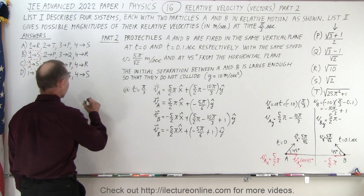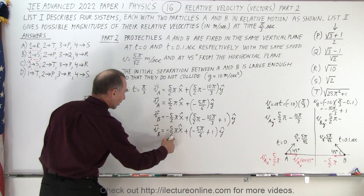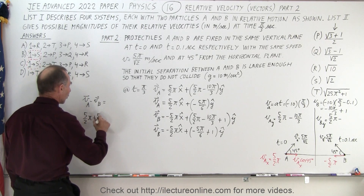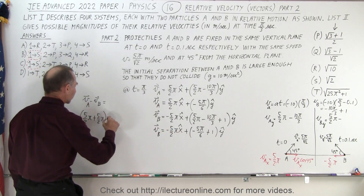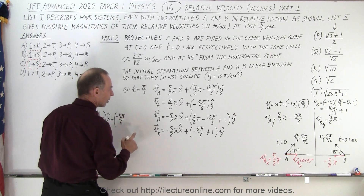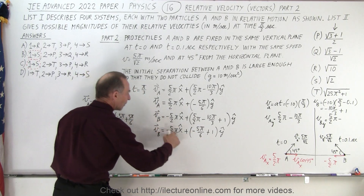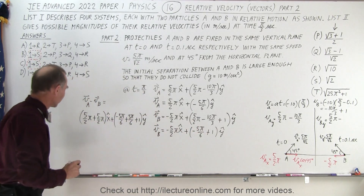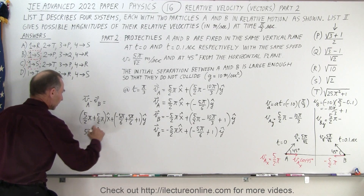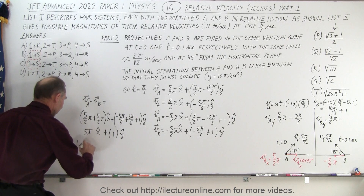Now subtracting: VA minus VB. In the x direction: 5π/2 minus (−5π/2) gives 5π/2 plus 5π/2, which equals 5π. In the y direction: (−5π/6) minus (−5π/6 + 1), the minus 5π/6 terms cancel, leaving minus 1, or equivalently −1 in the y direction. So VA minus VB equals 5π x-hat plus (−1) y-hat.